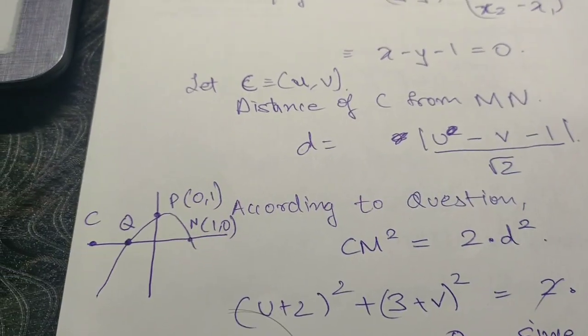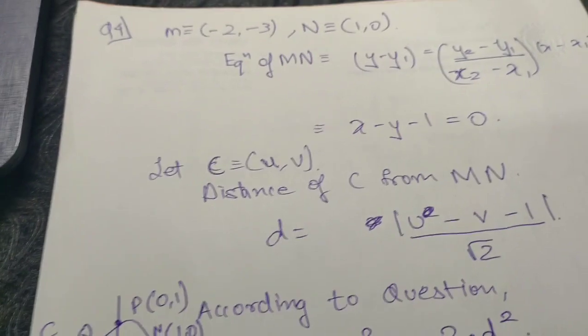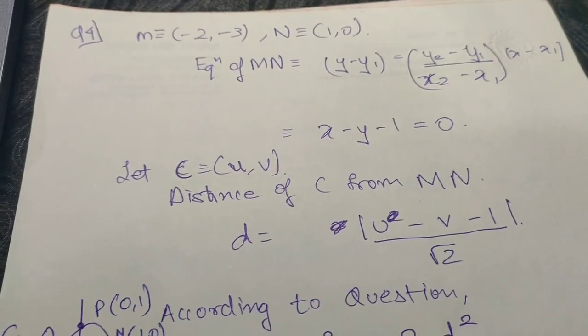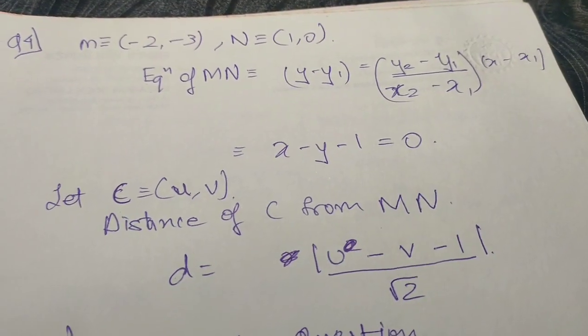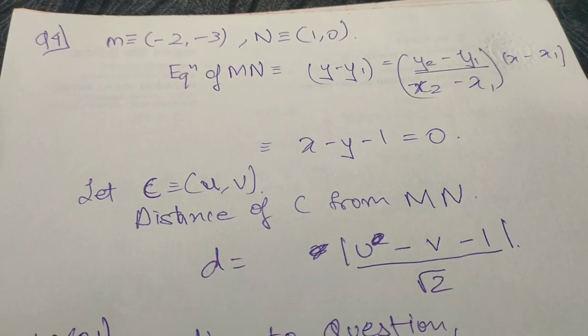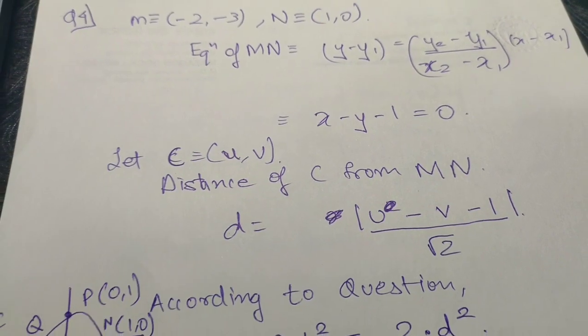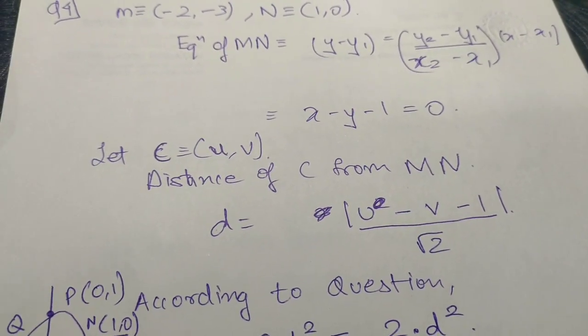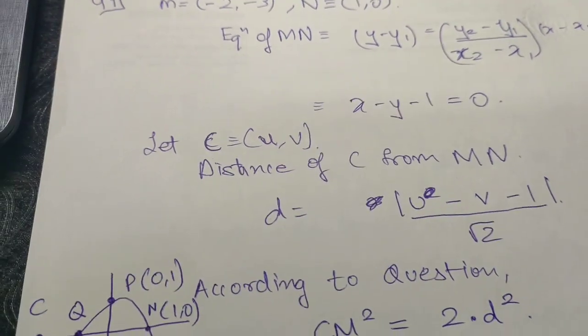For that we have this line with points M and N. With that we can find the equation with the help of two point form, and the equation is given by x minus y minus 1 equals to zero. Now we found the equation of line MN.